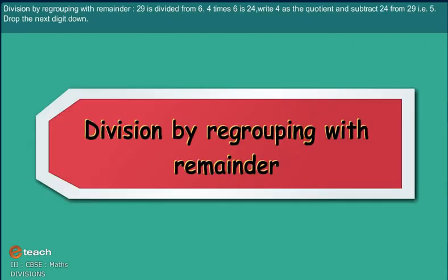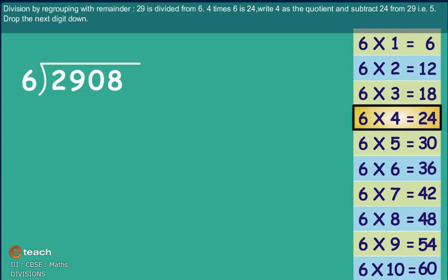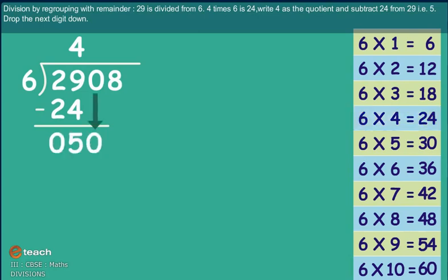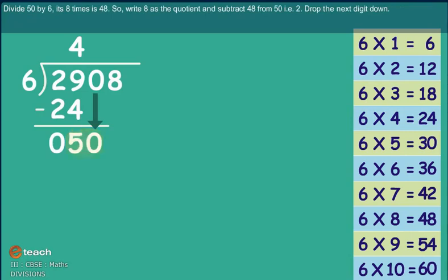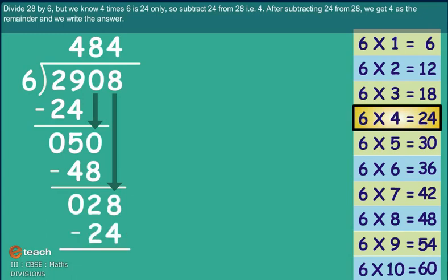Division by regrouping with remainder. 29 is divided by 6. 4 times 6 is 24. Write 4 as quotient and subtract 24 from 29. Drop next digit down. Divide 50 by 6. It's 8 times, which is 48. So write 8 as quotient and subtract 48 from 50. Drop next digit down. Divide 28 by 6. But we know 4 times 6 is 24 only. So subtract 24 from 28. After subtracting 24 from 28, we get 4 as remainder. And we write the answer.